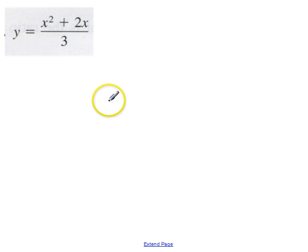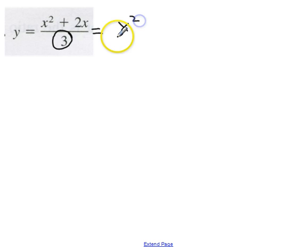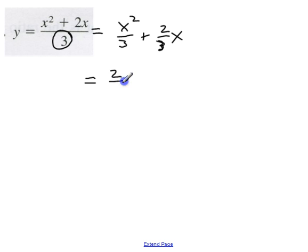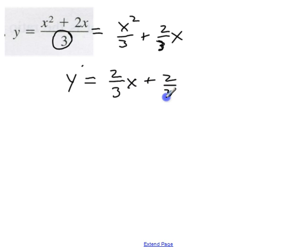Now be careful, because some things look like they're going to need the quotient rule when they really don't. Notice that all I have down here is a constant in the denominator. So that's really x squared over 3 plus 2 thirds x, and we just go ahead and use the power rule. Our derivative will be 2 thirds x plus 2 thirds. So be aware of that situation. And that's it for the product and quotient rules.